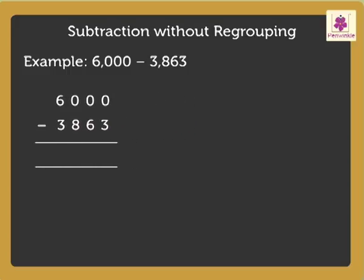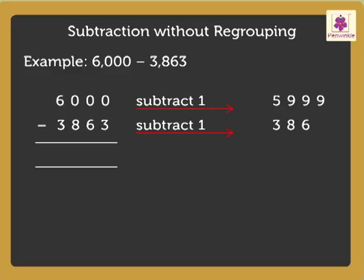So, when we reduce the minuend and subtrahend by 1, we get the numbers 5,999 and 3,862.